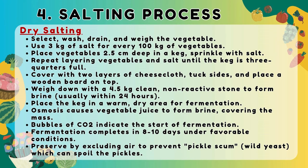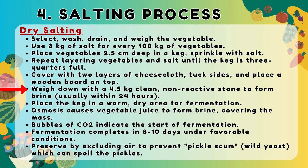Another method of processing is the salting process. For dry salting: select, wash, drain, and weigh the vegetable. Use 3 kilograms of salt for every 100 kilograms of vegetables. Place vegetables 2.5 centimeters deep in a keg and sprinkle with salt; repeat layering until the keg is three-quarters full. Cover with two layers of cheesecloth and place a wooden board on top, weighed down with a 4.5 kg clean non-reactive stone to form brine, usually within 24 hours. Place the keg in a warm dry area for fermentation; osmosis causes vegetable juice to form brine. Bubbles of CO2 indicate the start of fermentation, which completes in 8 to 10 days under favorable conditions.